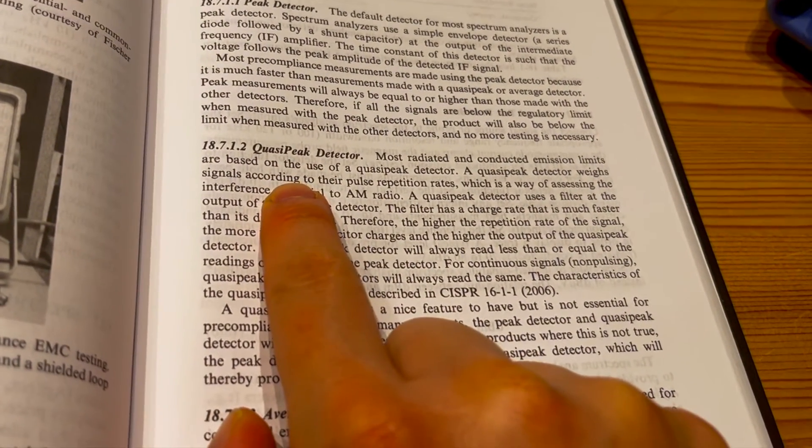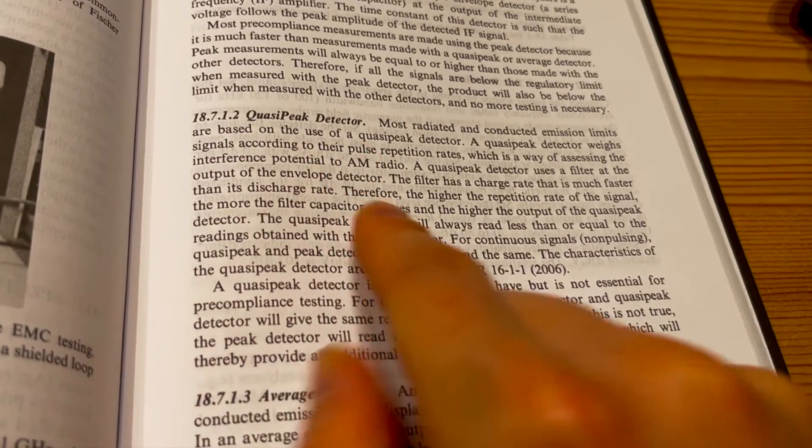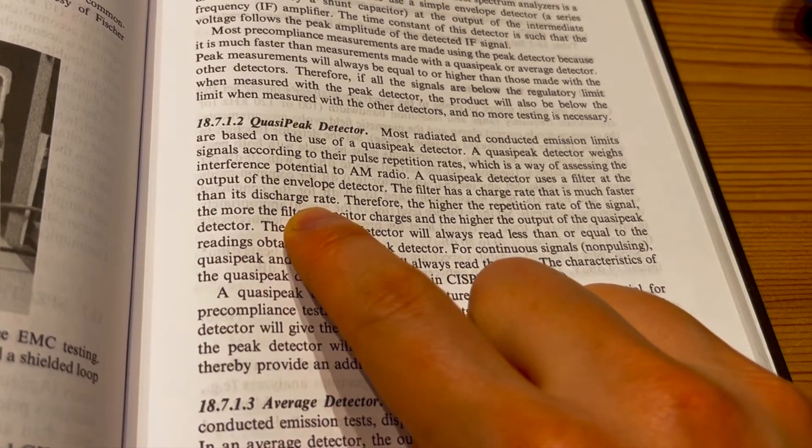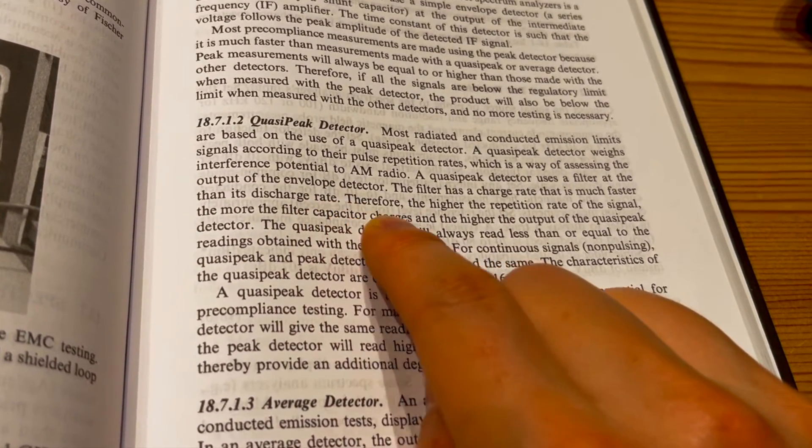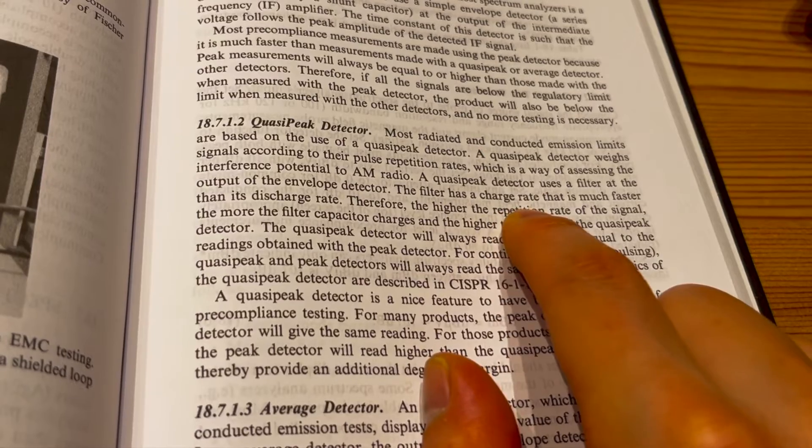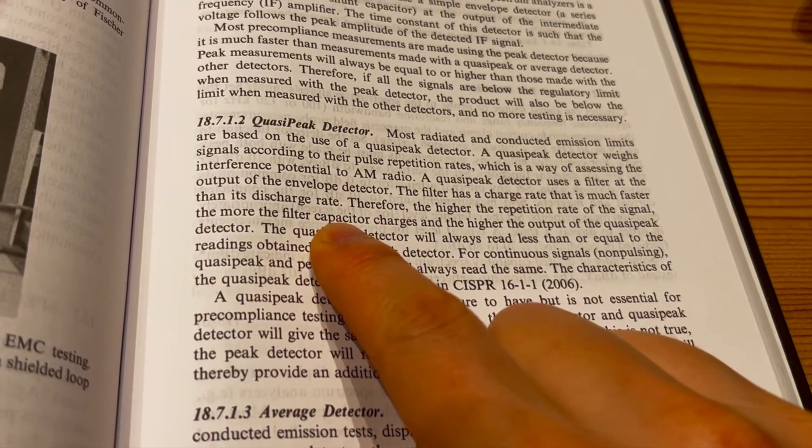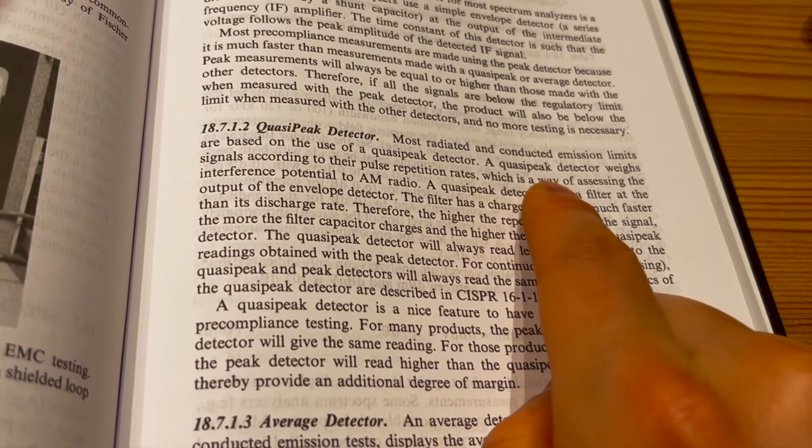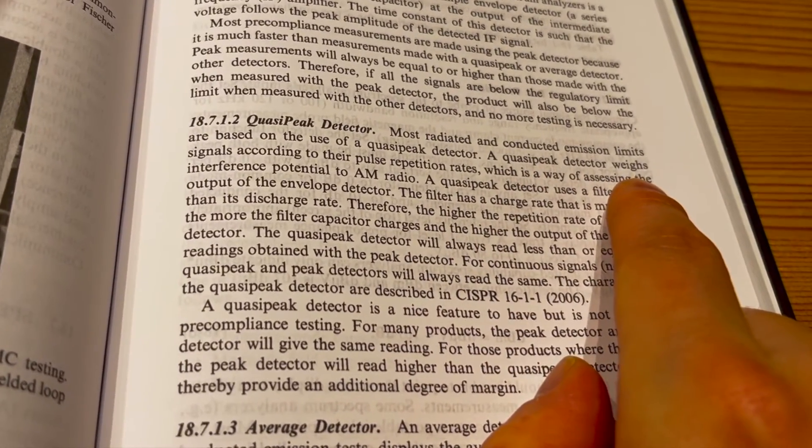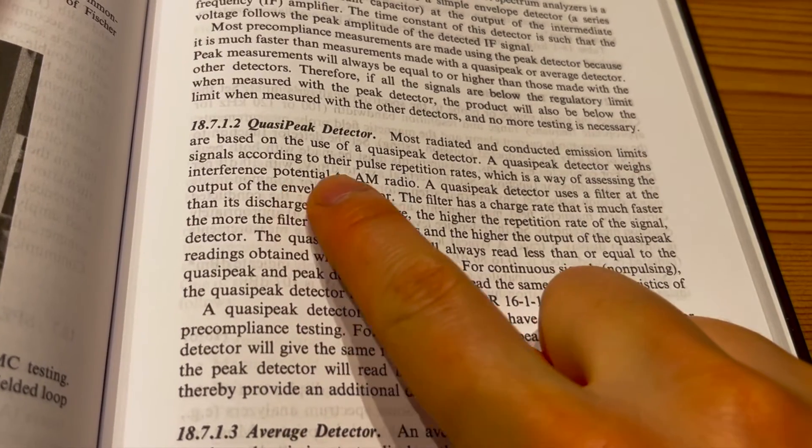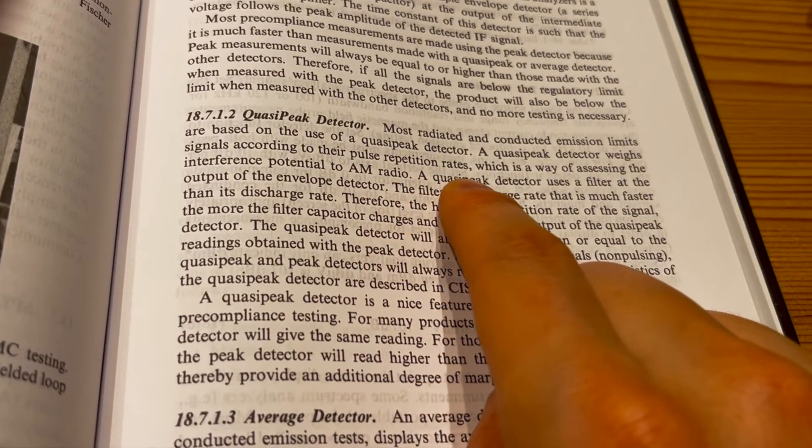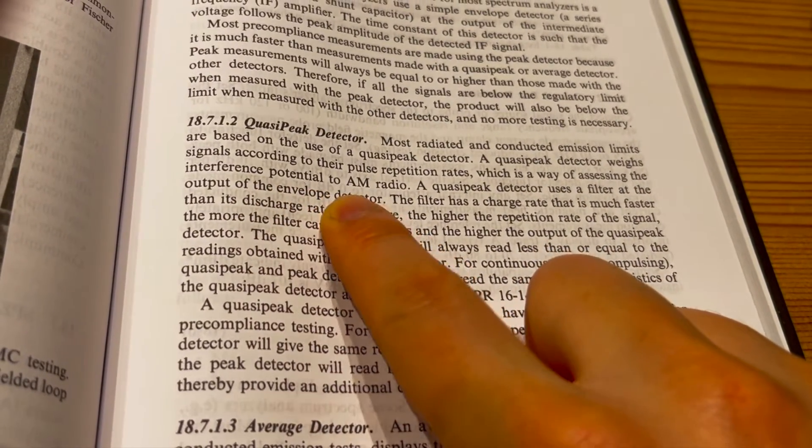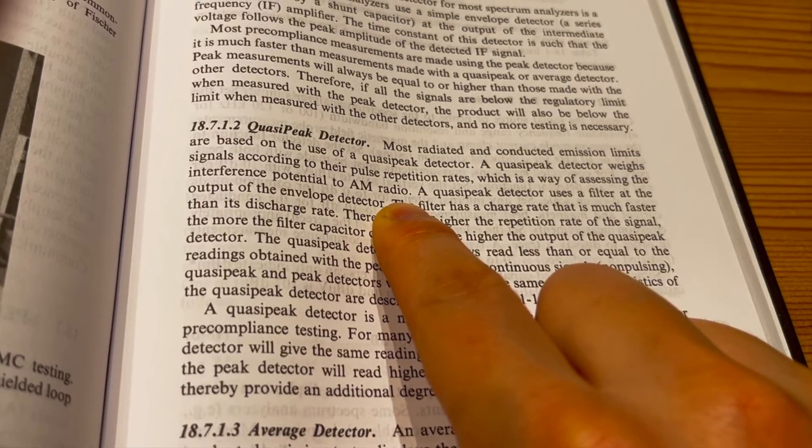It says quasi-peak detector. Yeah, as I said, using a filter that has this special detector and has a charge rate that's much faster than its discharge rate. Pretty much as what we explained. But look here, it says a quasi-peak detector weighs signals according to their pulse rates, pulse repetition rates, which is a way of assessing the interference potential to AM radio.